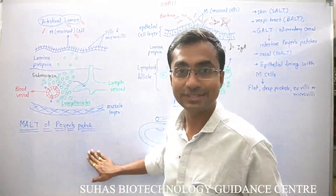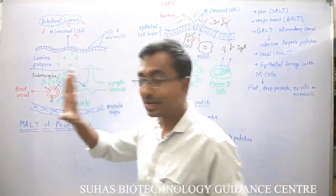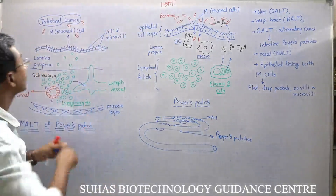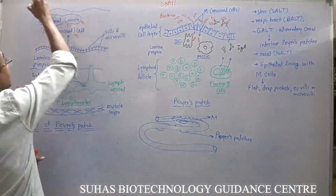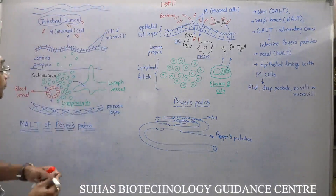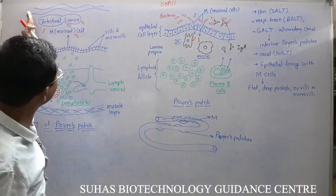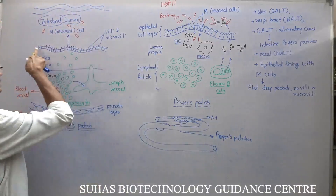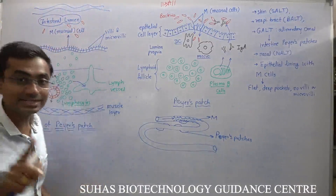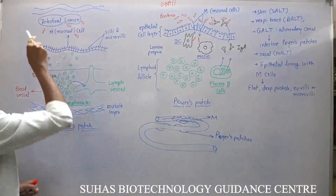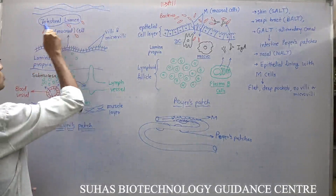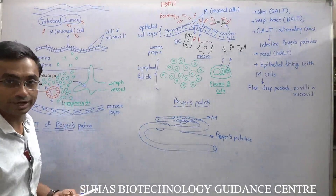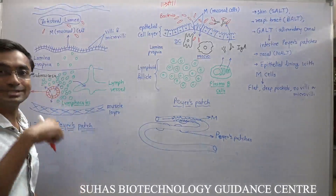Let's take a look at the Peyer's patch — we are going to see the MALT of the Peyer's patch. This is the intestinal lumen from which food is flowing; this is the small intestine. This is the lining of epithelial cells, and in between are present M cells, that is mucosal cells. Along with food, you can see microbes are also entering our body — food, water, or anything gives them a chance to go inside.